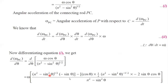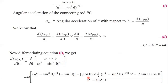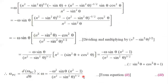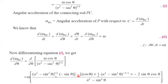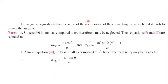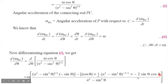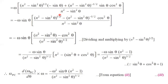Writing the quotient rule: v is the denominator, u is omega cos theta, so u dash is minus omega sin theta. Then minus u times v dash — differentiating the square root term brings 1 by 2 outside, and the power becomes minus 1 by 2, with the chain rule giving minus 2 sin theta times cos theta. After dividing by v squared, and collecting terms — taking cos theta and then sin theta as common factors — we get n squared minus sin squared theta in the numerator, along with cos squared theta.